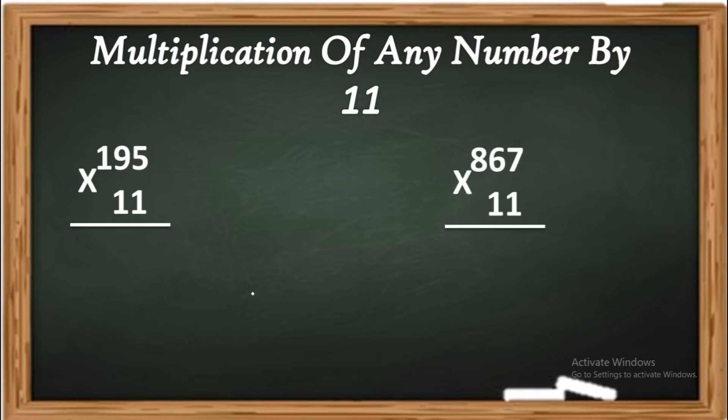Okay, first, write 5 as it is and 1 as it is. 5 as it is and 1 as it is. In second step, 9 plus 5.